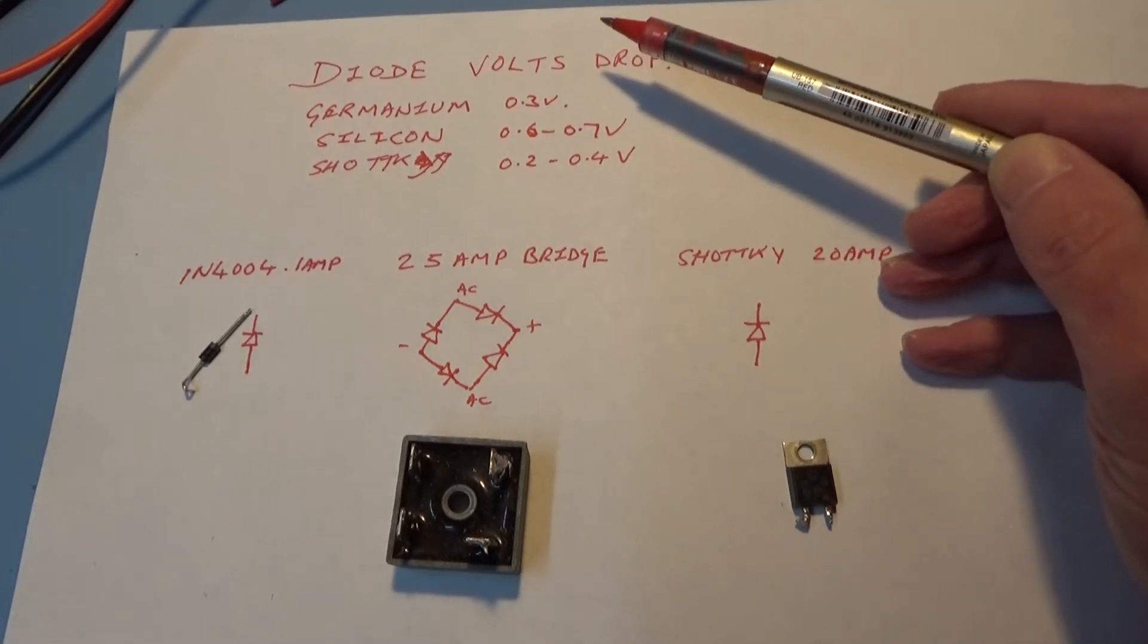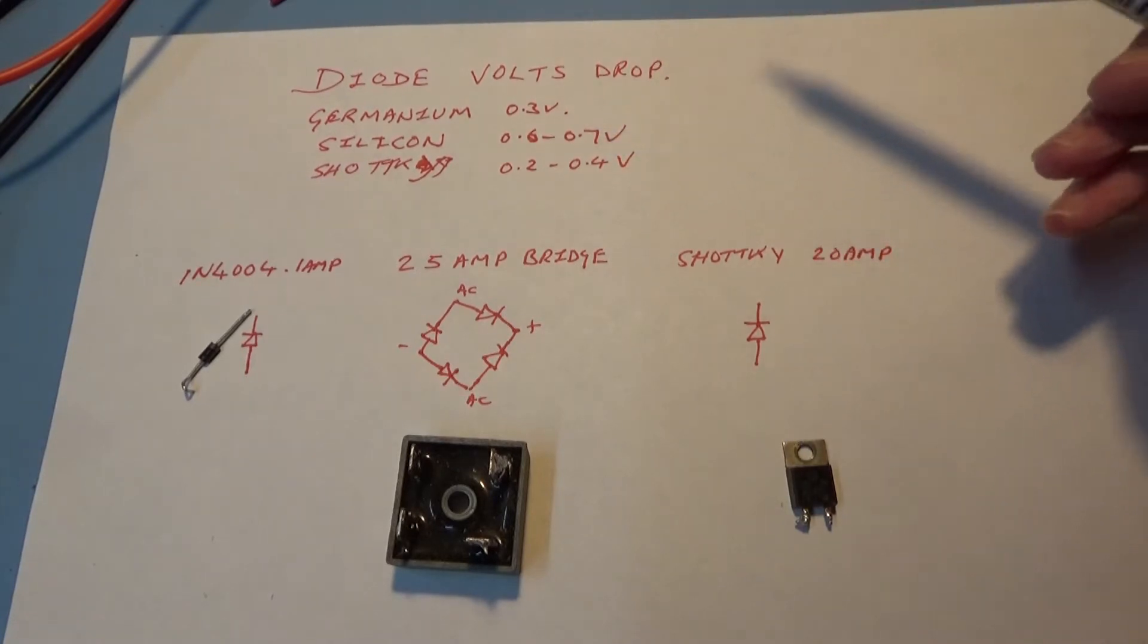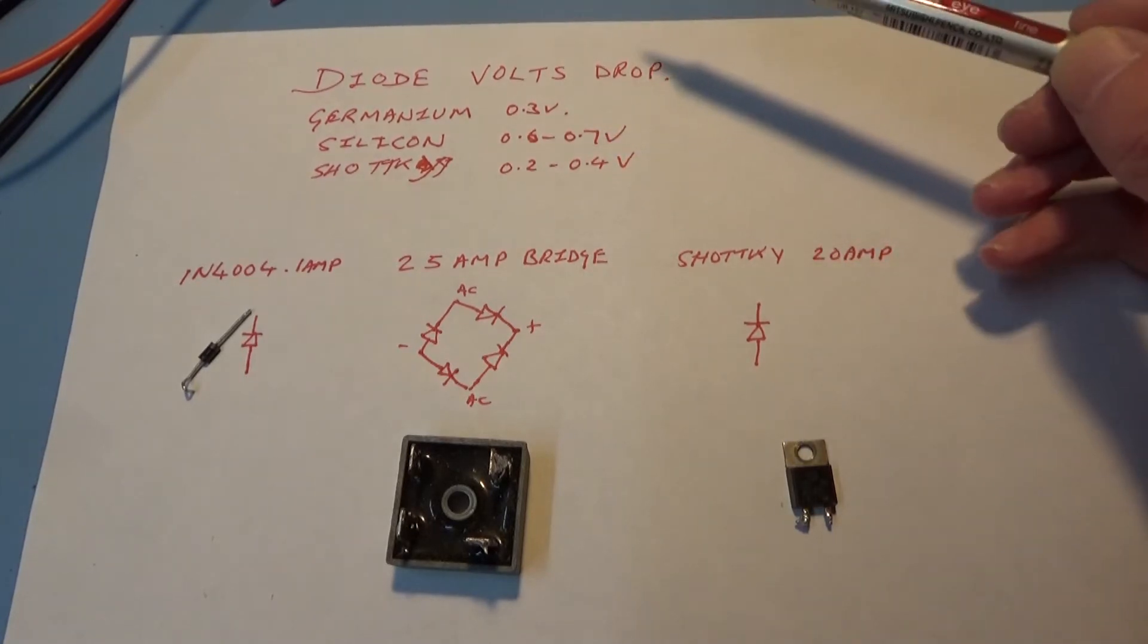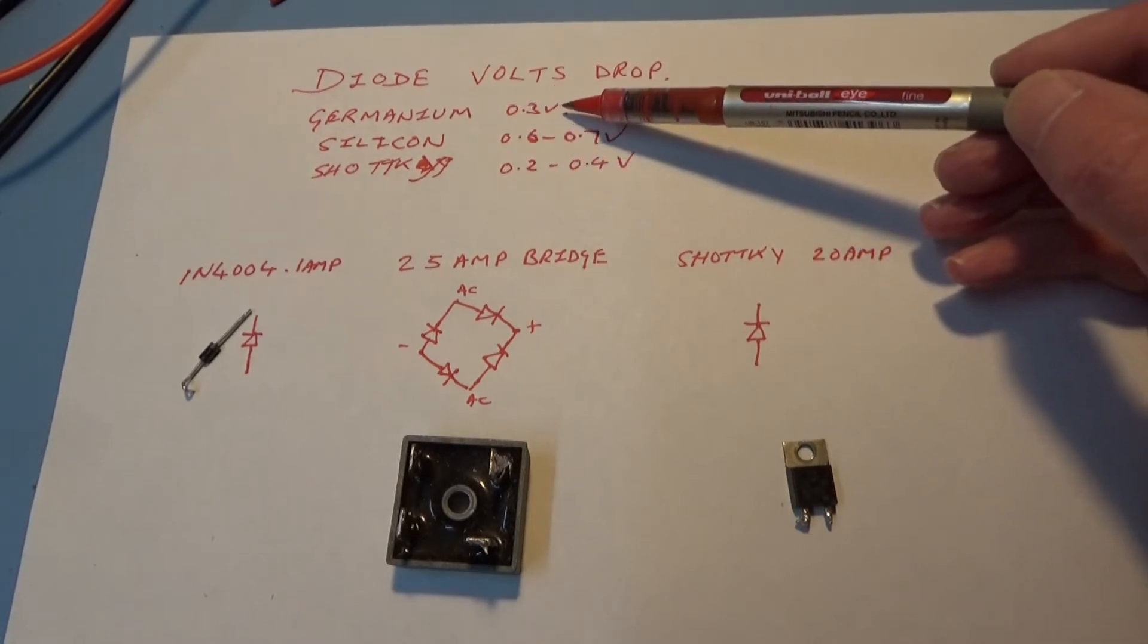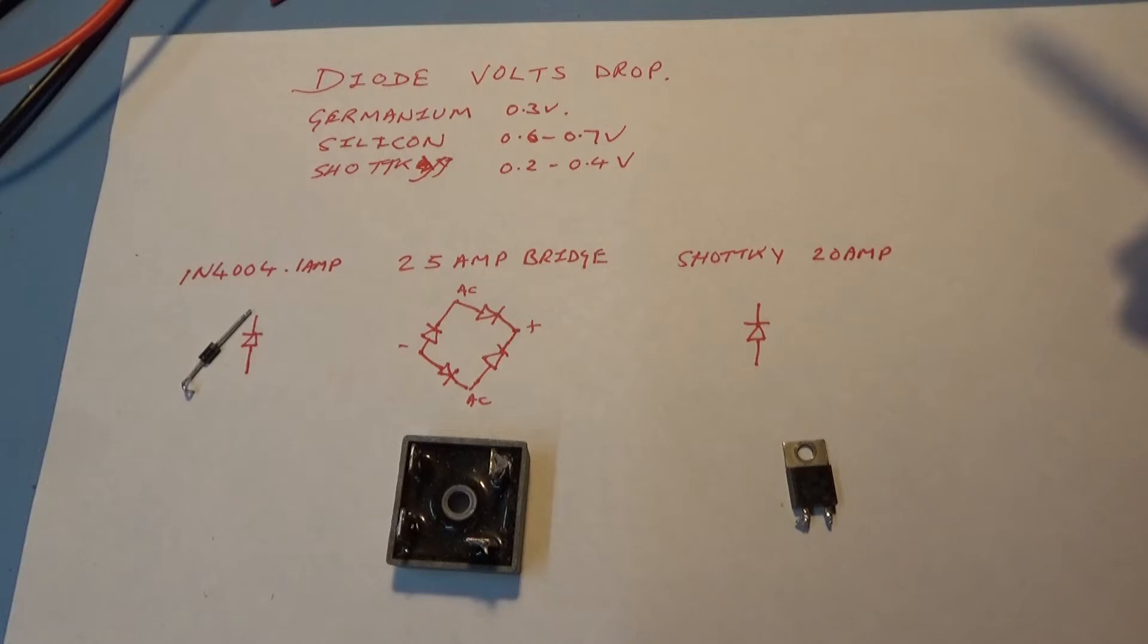Now I'm not going to be talking about small signal diodes, I'm more concerned with power diodes. For instance, germanium is traditionally 0.3 volts but that's a small signal diode used in radio receivers and detectors.